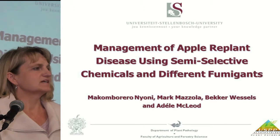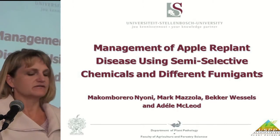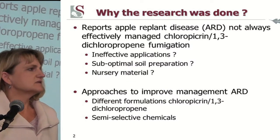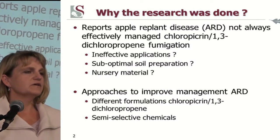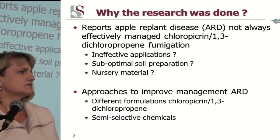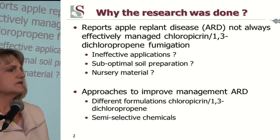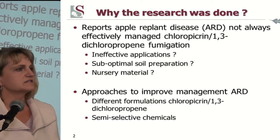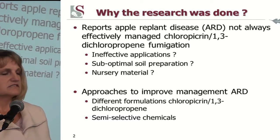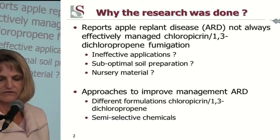This is the work of my PhD student, Maku Ninyoni, that finished this year. We did the research because there are various reports from growers that even though they fumigate, the trees in their second and third year still seem stunted and don't really want to take off. There are various reasons for this, which can include ineffective applications, suboptimal soil preparations, as well as nursery material that are contaminated with the ARD pathogens.